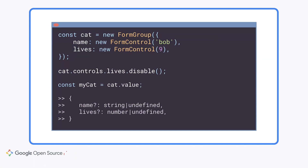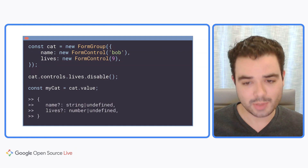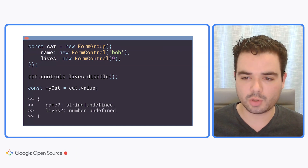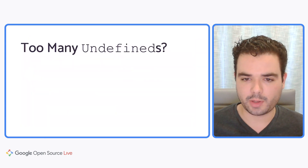Specifically, when you call .value, any key in that form group might have been disabled and could be missing. As a result, the type knows that each key is optional. Both the name key and the lives key have a question mark after them — TypeScript notation indicating these keys might not be present. When you use those values, the type system enforces that you handle the possibility that each key could be undefined. So when using cat.value, all fields are optional because they might have been disabled.